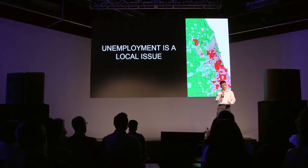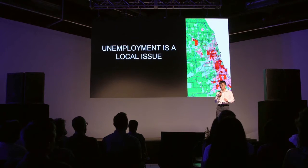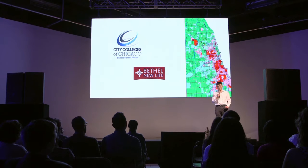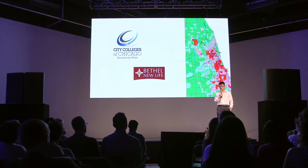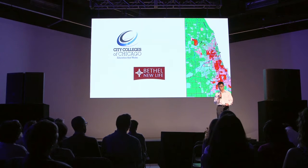And there are many locally relevant barriers preventing people from obtaining quality work. This can include transportation costs, or simply the information of what jobs are available in a neighborhood, and what skills those employers are looking for. But many organizations, such as City Colleges of Chicago and Beto New Life, a vocational training program located in the west side of Chicago, are working hard to prepare its members for the ever-changing economy.